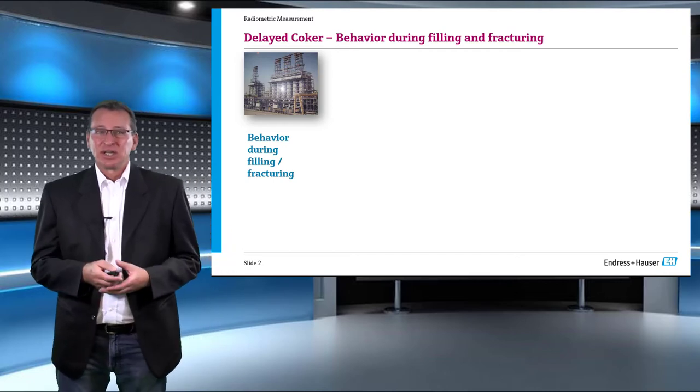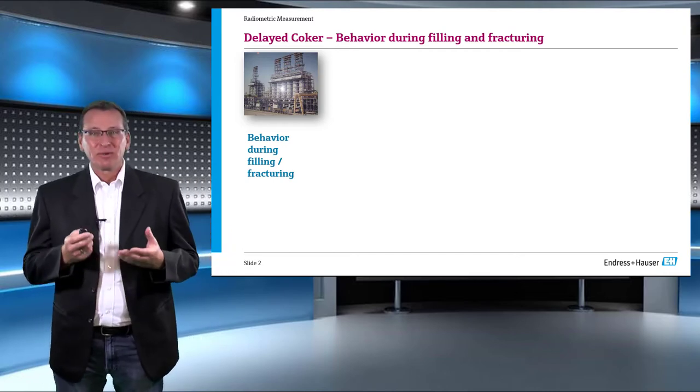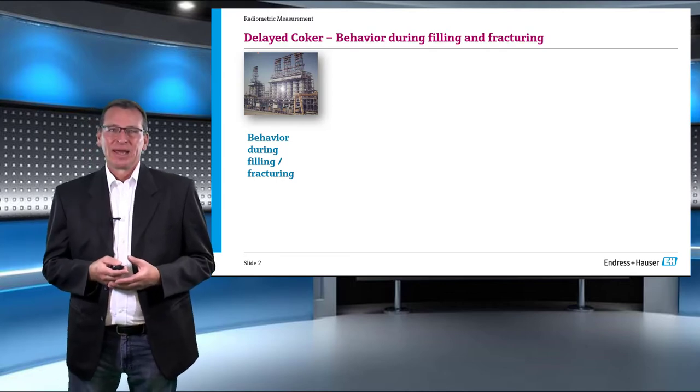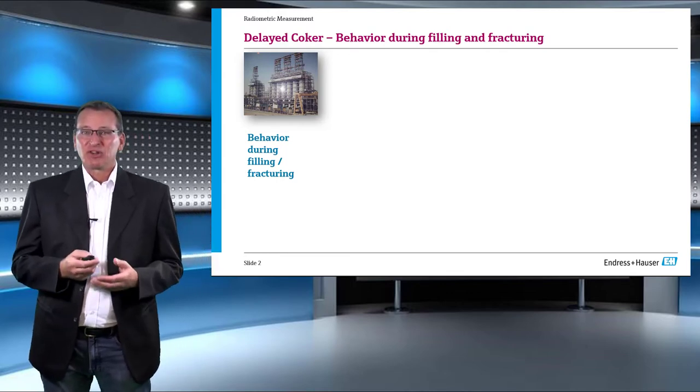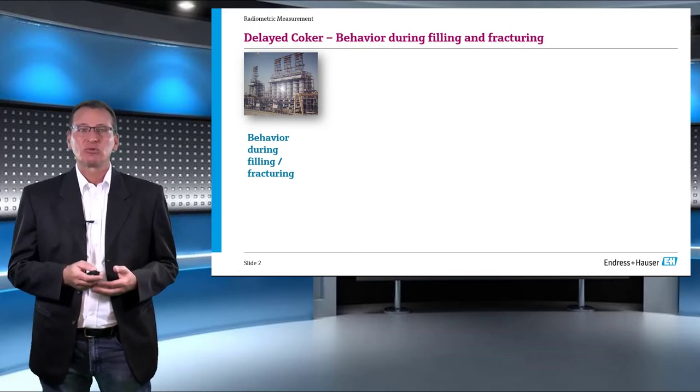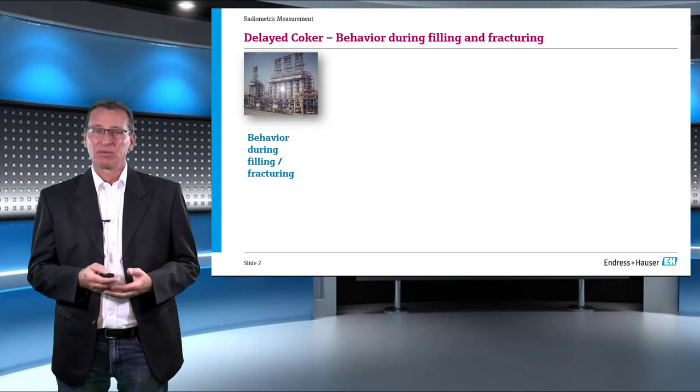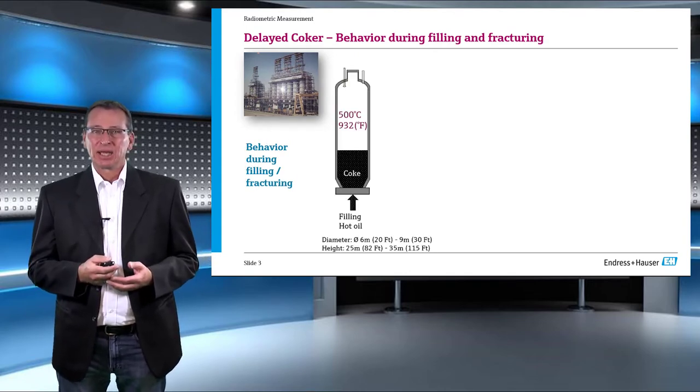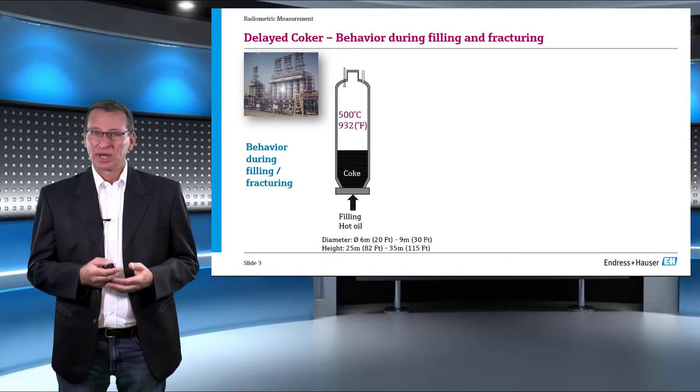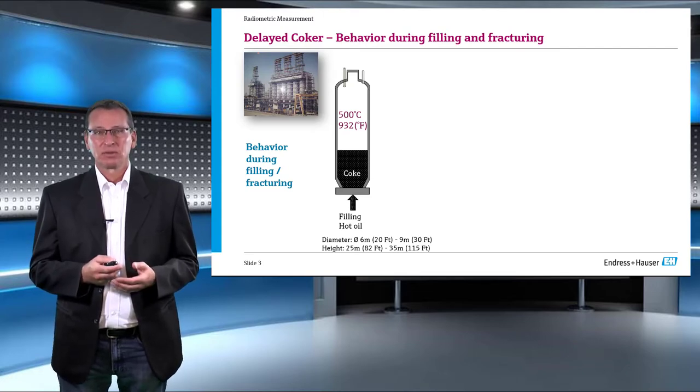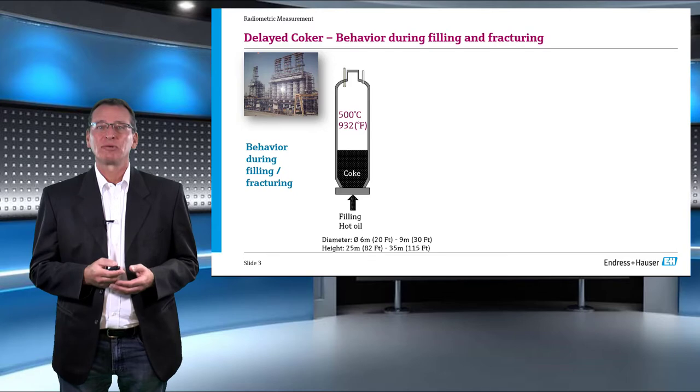I would like to start with an introduction on the various stages of operation in a delayed coker unit. A delayed coker unit is a semi-batch operation with sets of two, four, or six drums running one after the other. A single delayed coker drum has a diameter varying between 6 to 9 meters (20 to 30 feet) and height between 25 to 35 meters (82 to 115 feet).